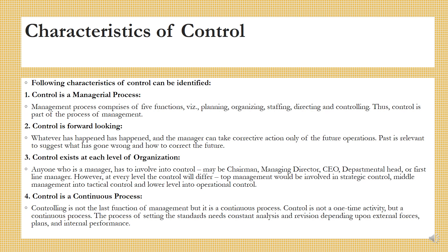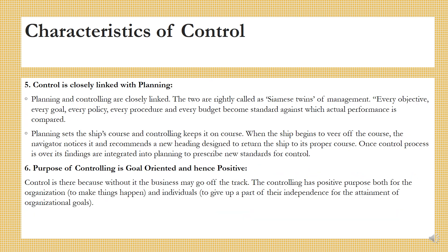Control is closely linked with planning. Planning and controlling are closely linked — the two are rightly called the Siamese twins of management. Every objective, every goal, every policy, every procedure and every budget becomes a standard against which actual performance can be compared. Planning sets the ship's course and controlling keeps it on the course. When the ship begins to veer off course, the navigator notices it and recommends a new heading designed to return the ship to its proper course.